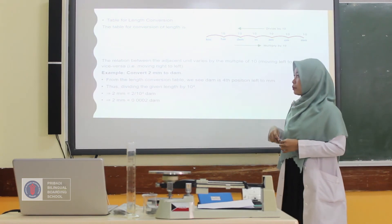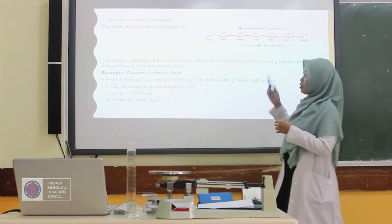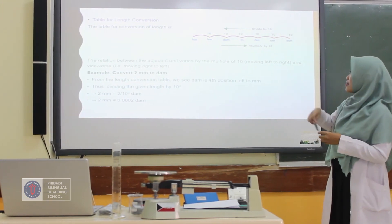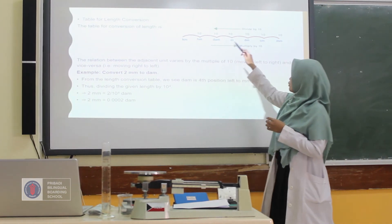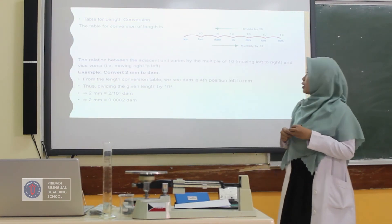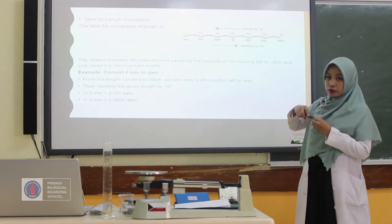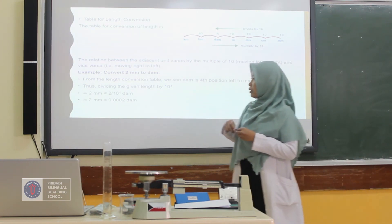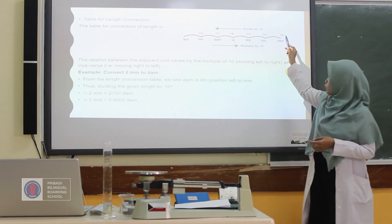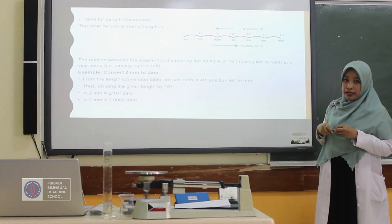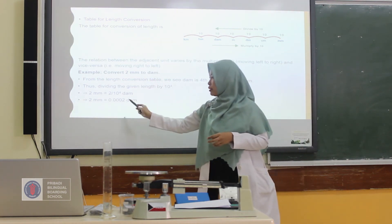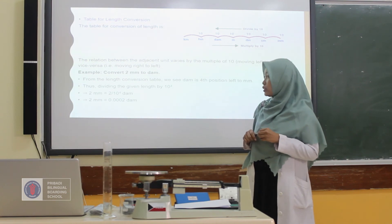This is the conversion table for length. You already know about this from mathematics. If you want to change from kilometer to hectometer, you multiply by 10, and vice versa. For example, if you want to change from millimeter to centimeter, you divide by 10. So, to convert 2 millimeters into decimeters, you divide by 10 to the power of 4, or 0.0001, giving you 0.0002 decimeters.